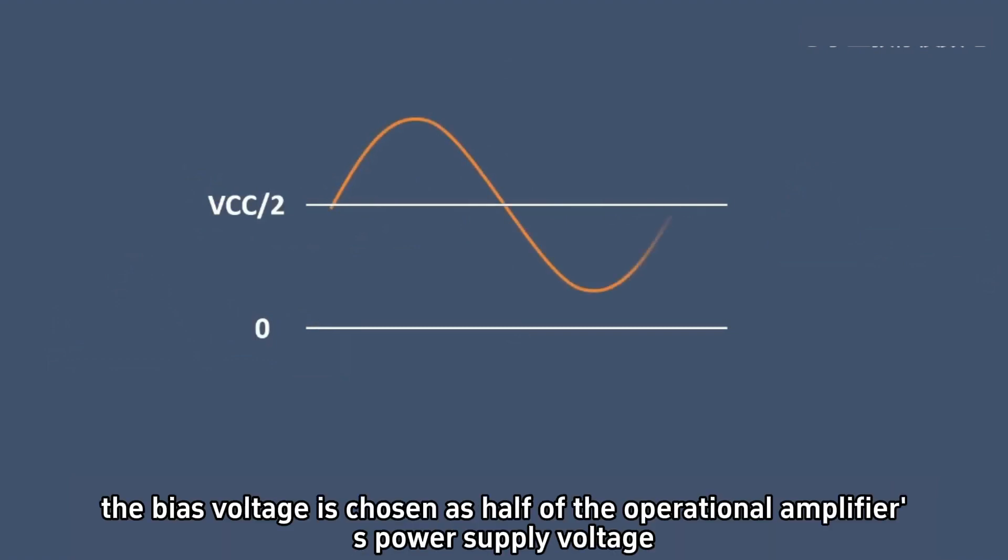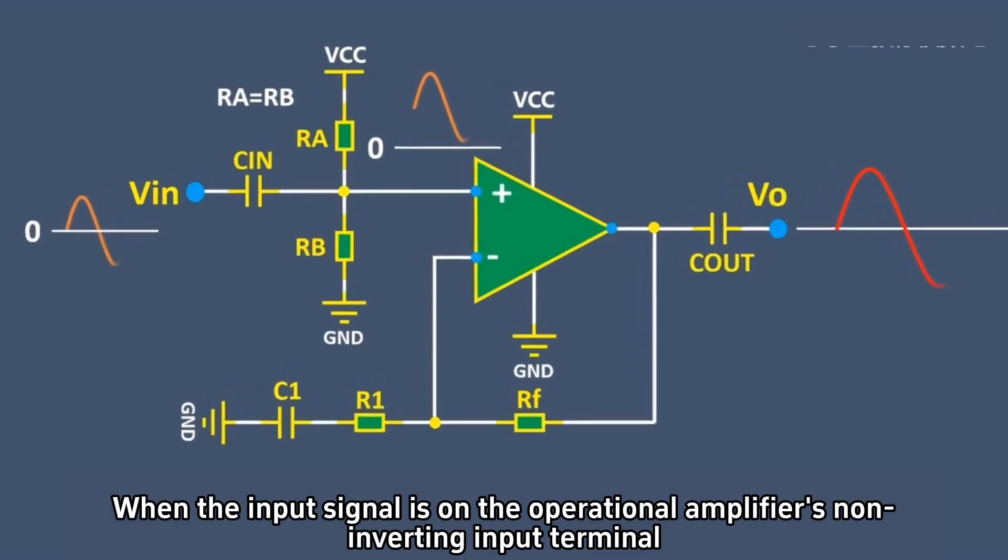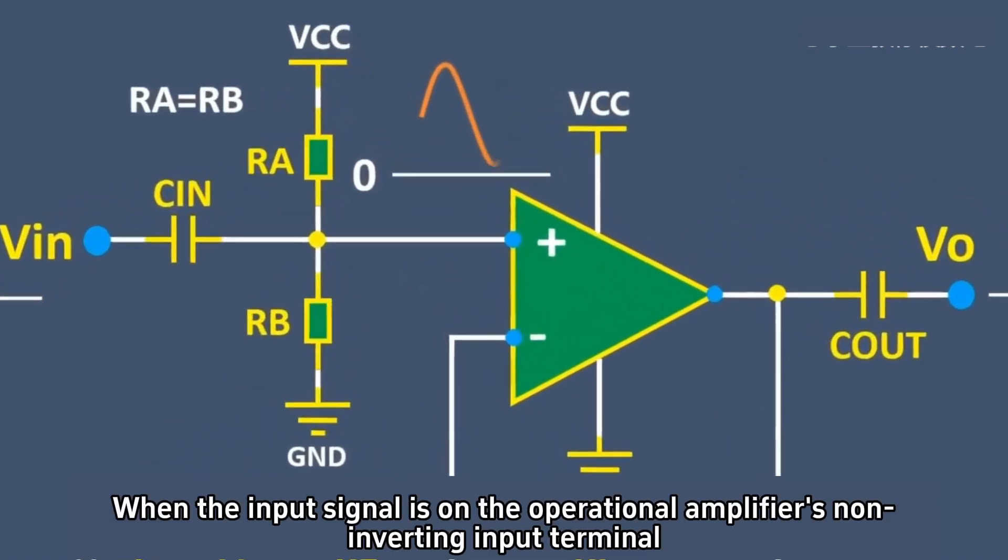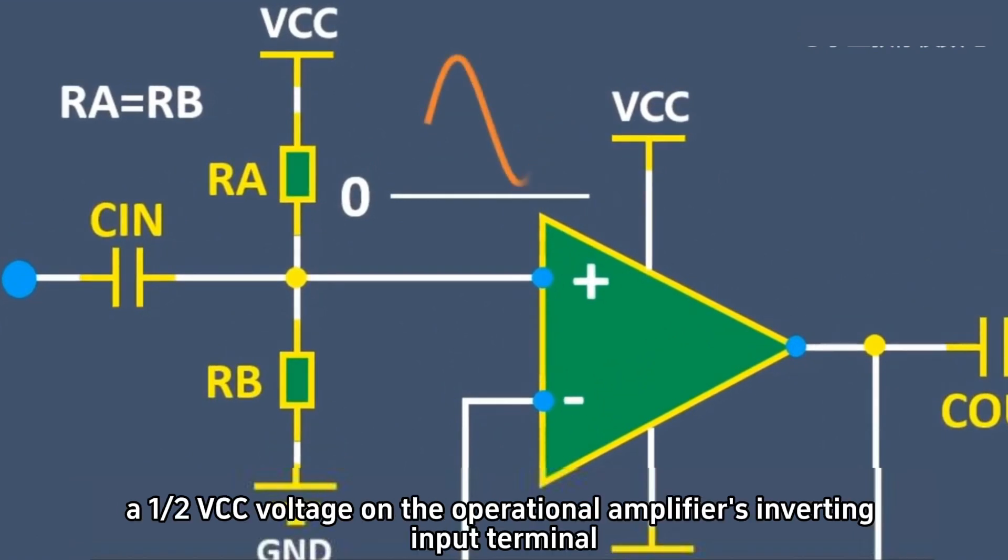Generally, the bias voltage is chosen as half of the operational amplifier's power supply voltage. When the input signal is on the operational amplifier's non-inverting input terminal, two equal resistors are used to form a voltage divider that generates a one-half Vcc voltage on the operational amplifier's inverting input terminal.